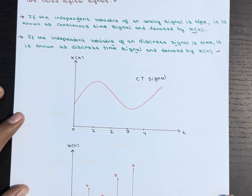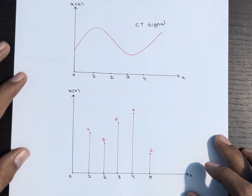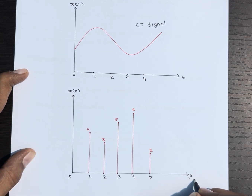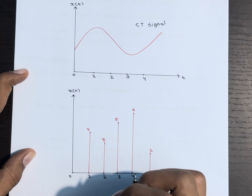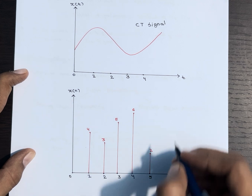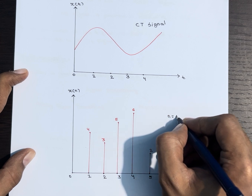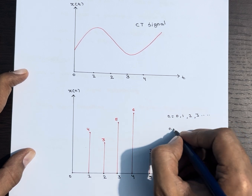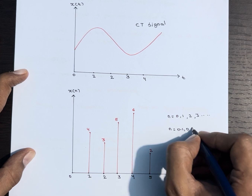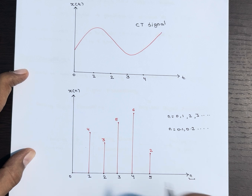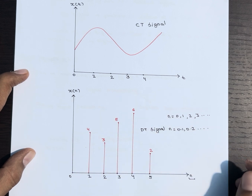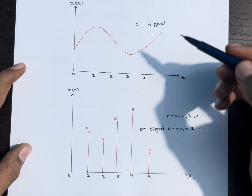A discrete time signal is denoted by x(n), where n is the time axis. A discrete time signal has values for only discrete points in time. For example, it will give a value at n = 0, 1, 2, or 3. Don't expect a value at n = 0.1 or 0.2 — a discrete time signal has values only for discrete points in time. That is the difference between a continuous time signal and a discrete time signal.